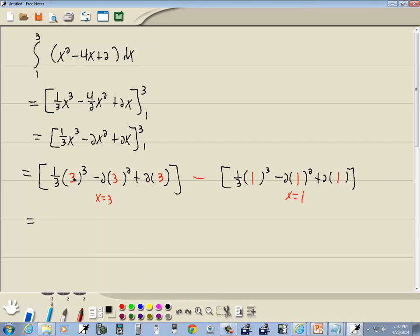3³ is 27, divided by 3 is 9, minus 3² is 9 times 2 is 18, plus 2 times 3 is 6.